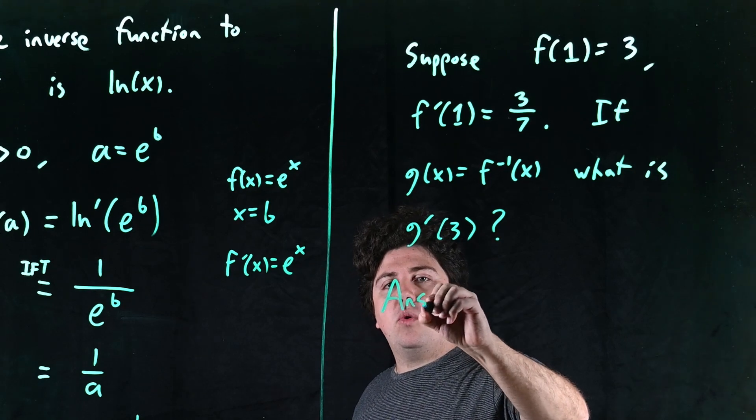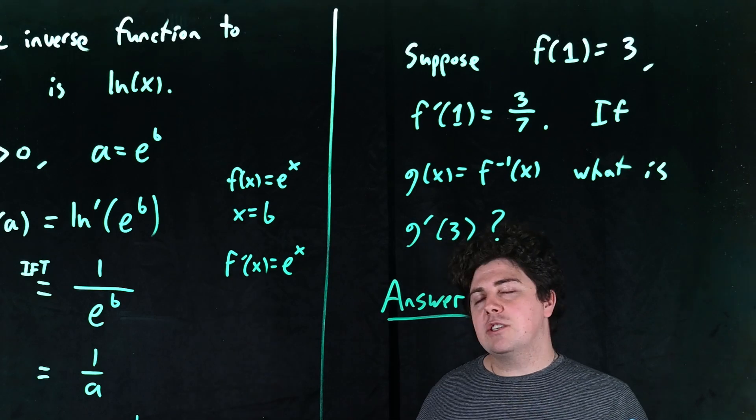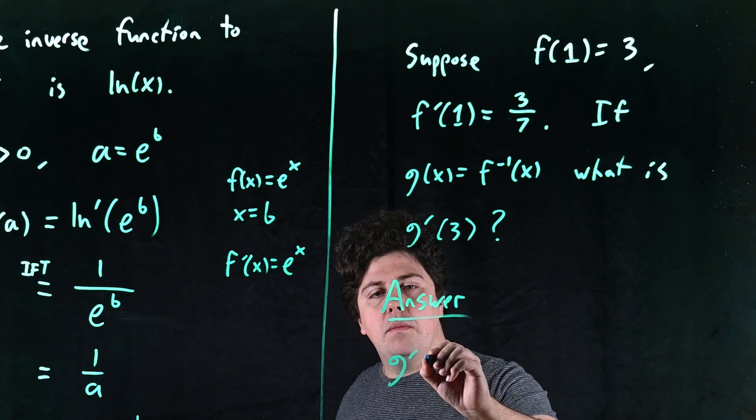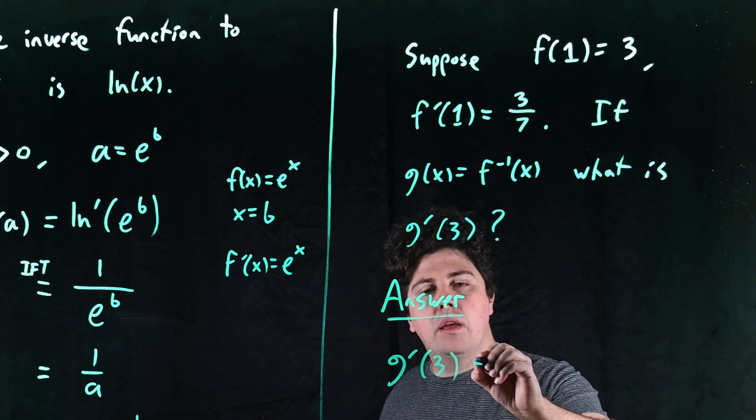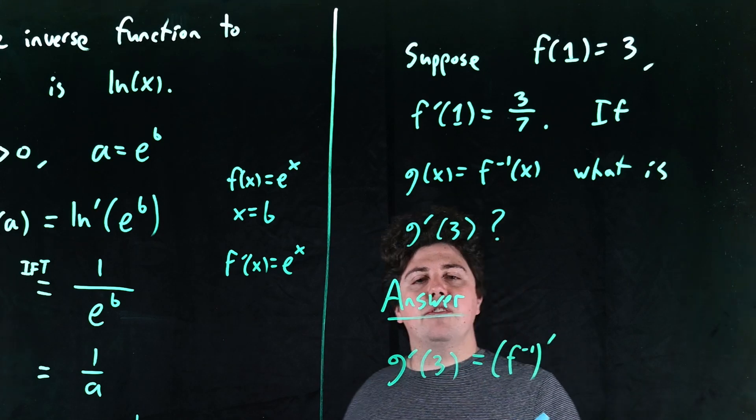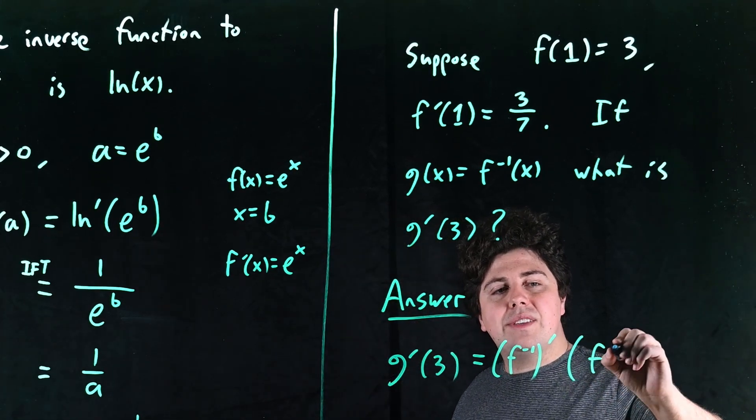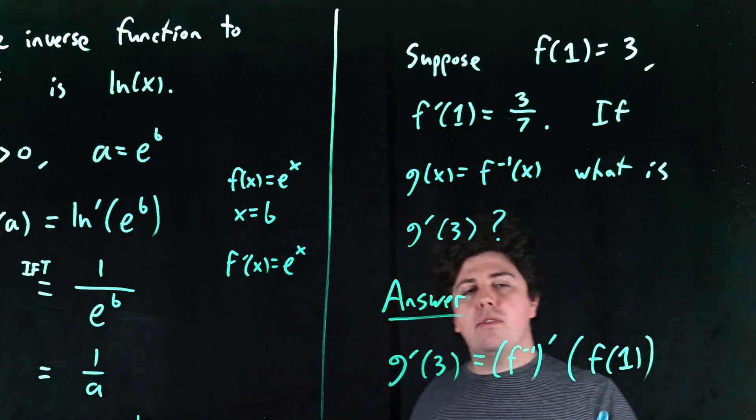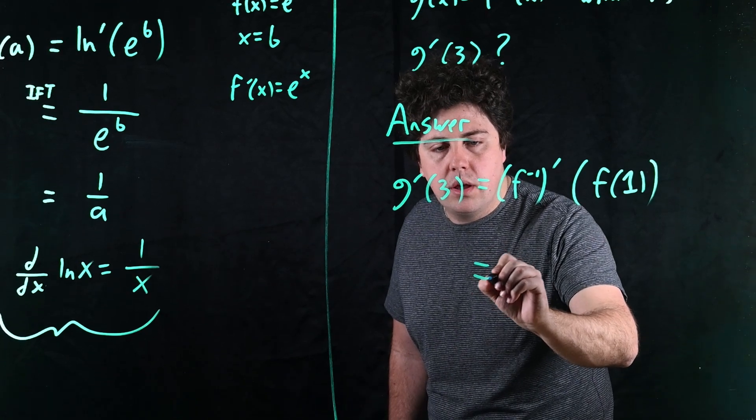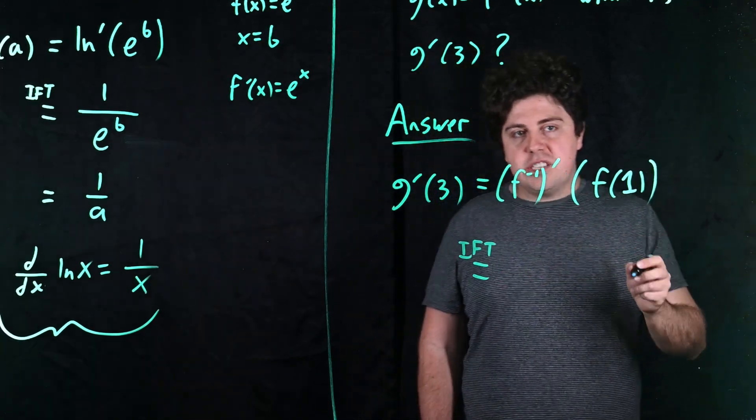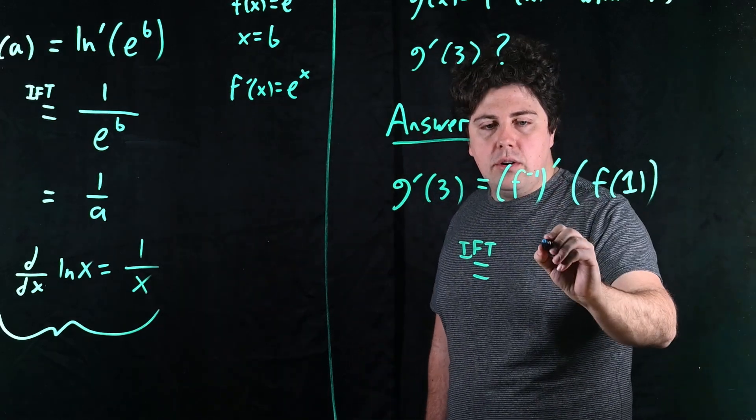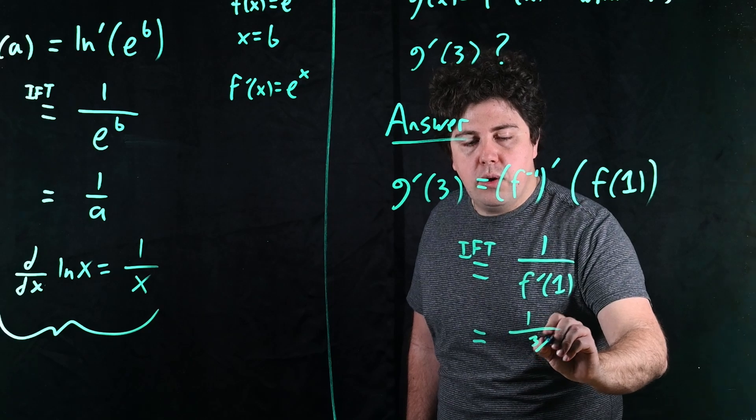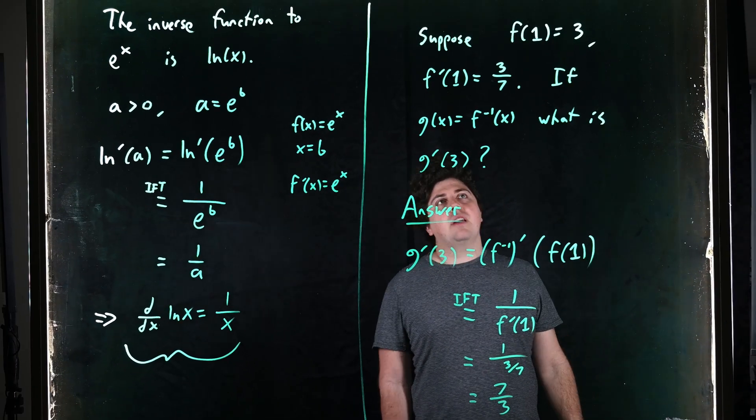So, keep that in the back of your mind. So, the answer to this question here is, it looks a little funny because we don't have a graph to work with, we don't have a lot of information, but, we can use the IFT fairly directly here. G prime at 3, well, G is f inverse, so we're looking at f inverse prime, and what is 3? 3 is f of 1. Aha! We've been able to rewrite this strange-looking problem into one that we can actually directly apply the IFT to. The IFT is tailor-made for this specific situation. This tells us that the derivative here is 1 over f prime of 1, which is 1 over 3 over 7, which is 7 over 3. And that's how a problem like this shakes out.